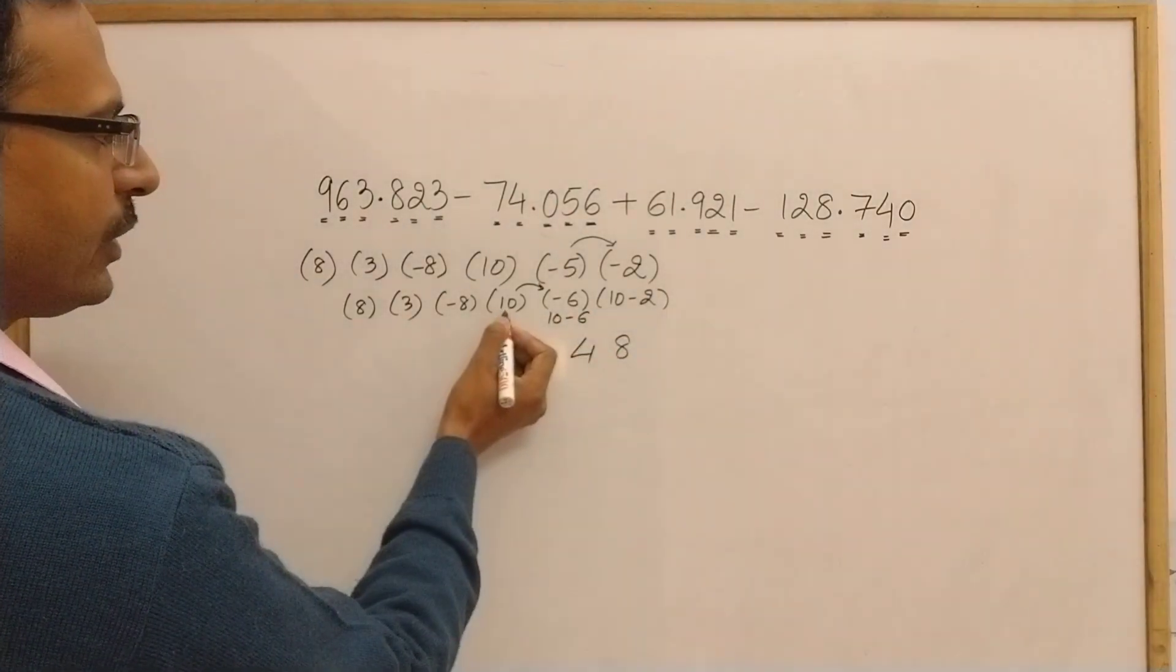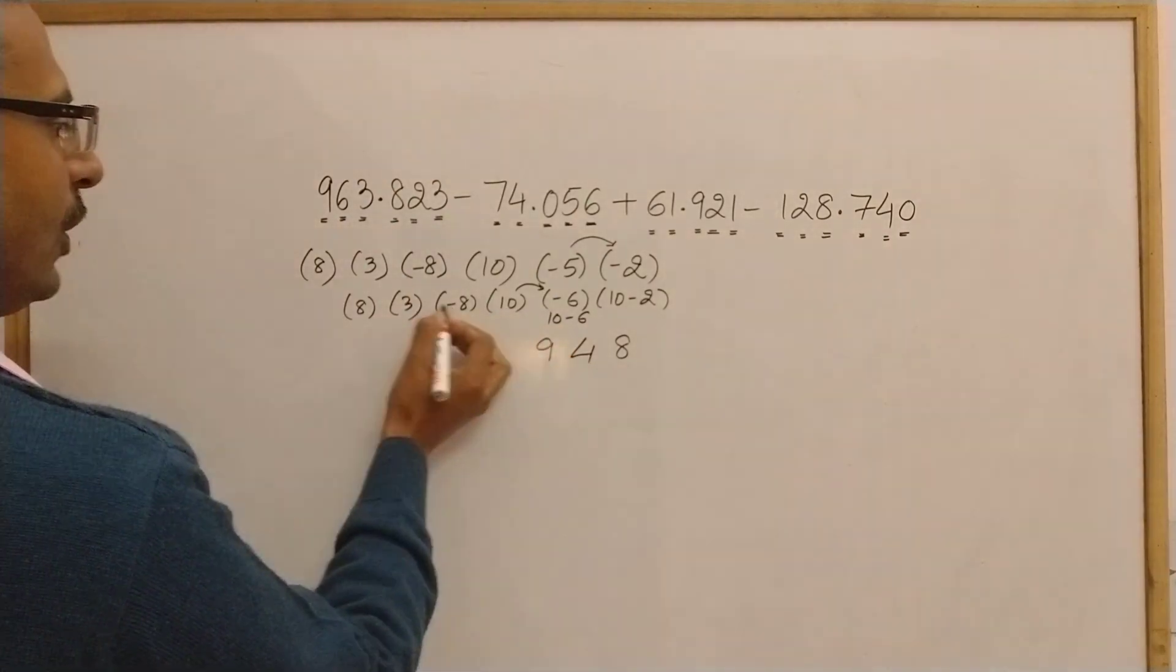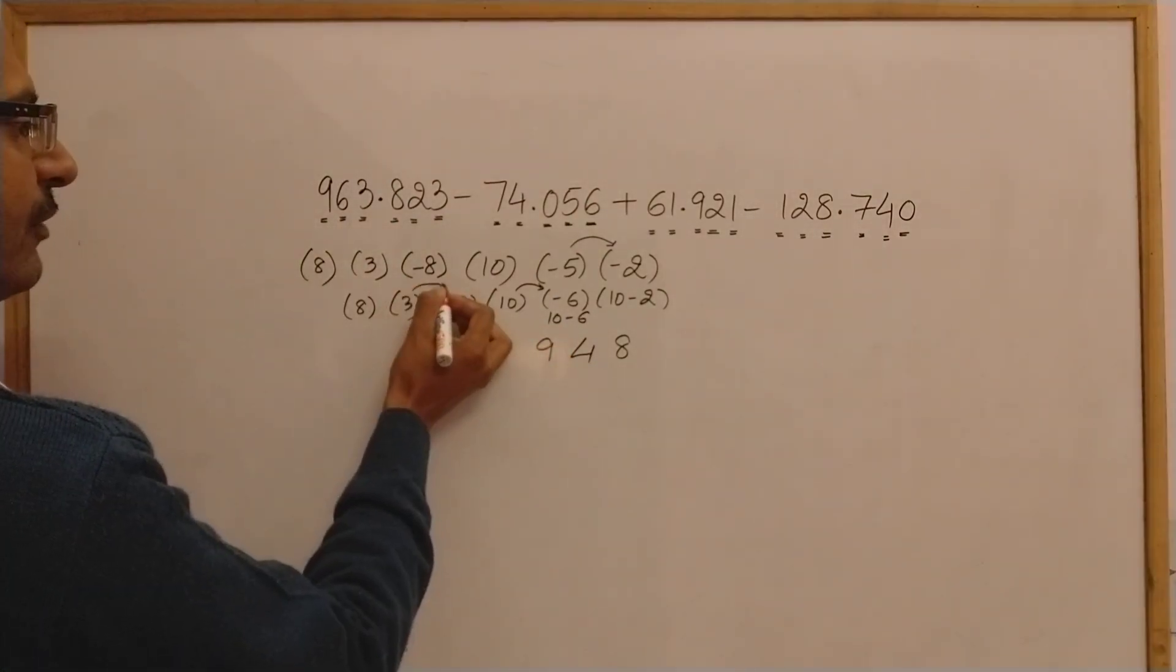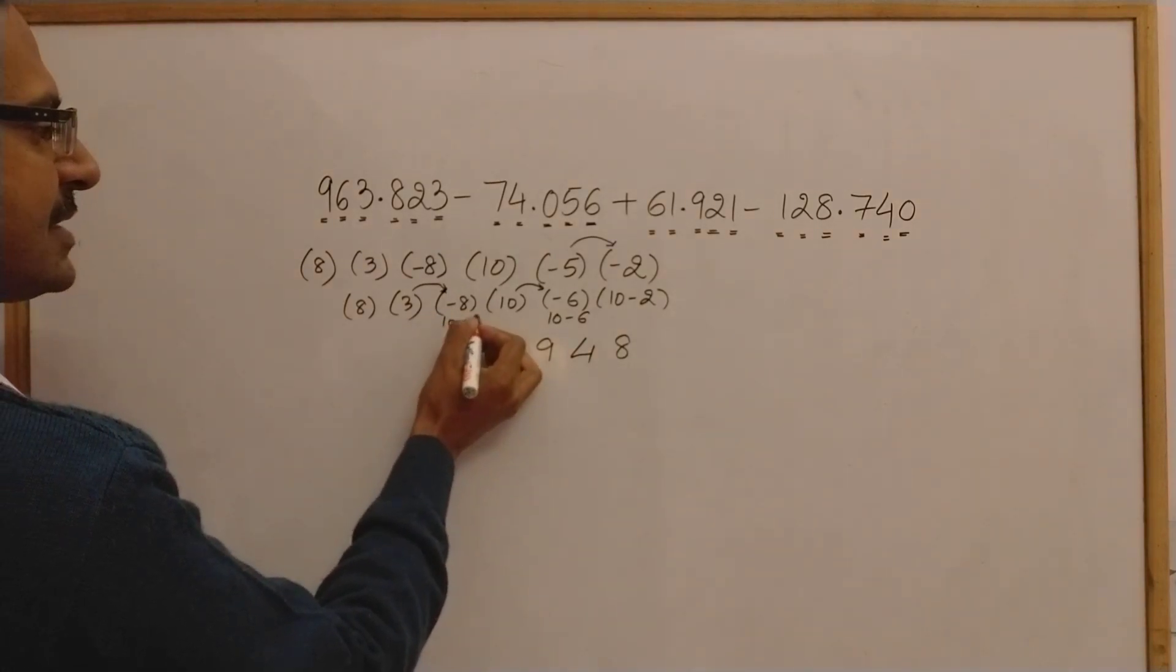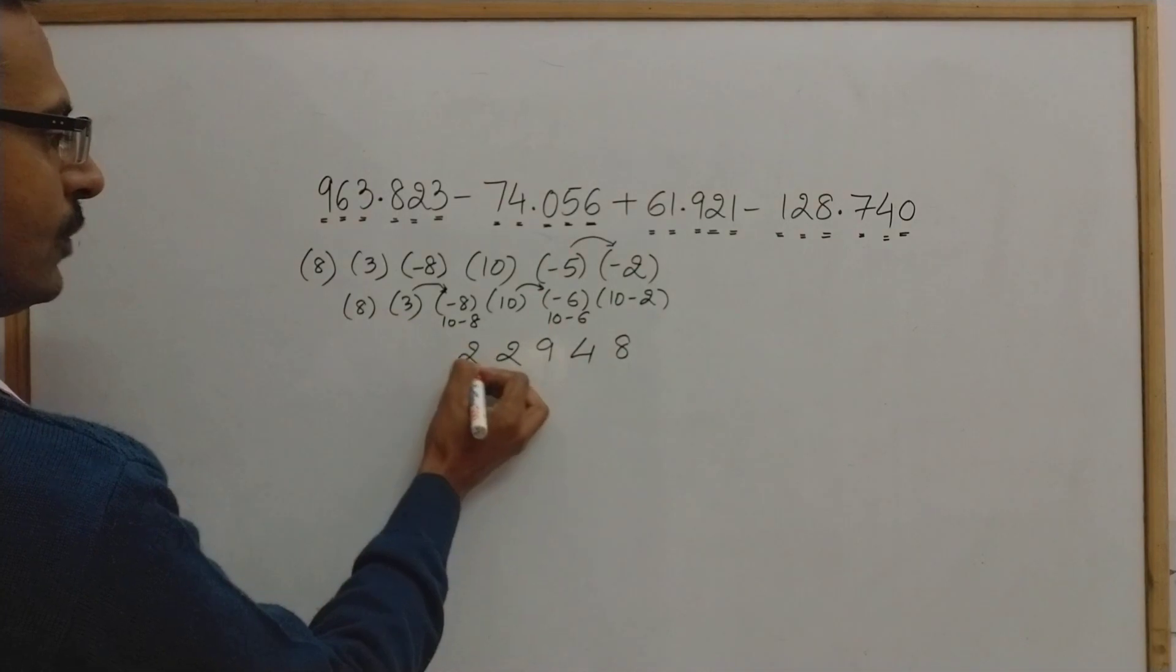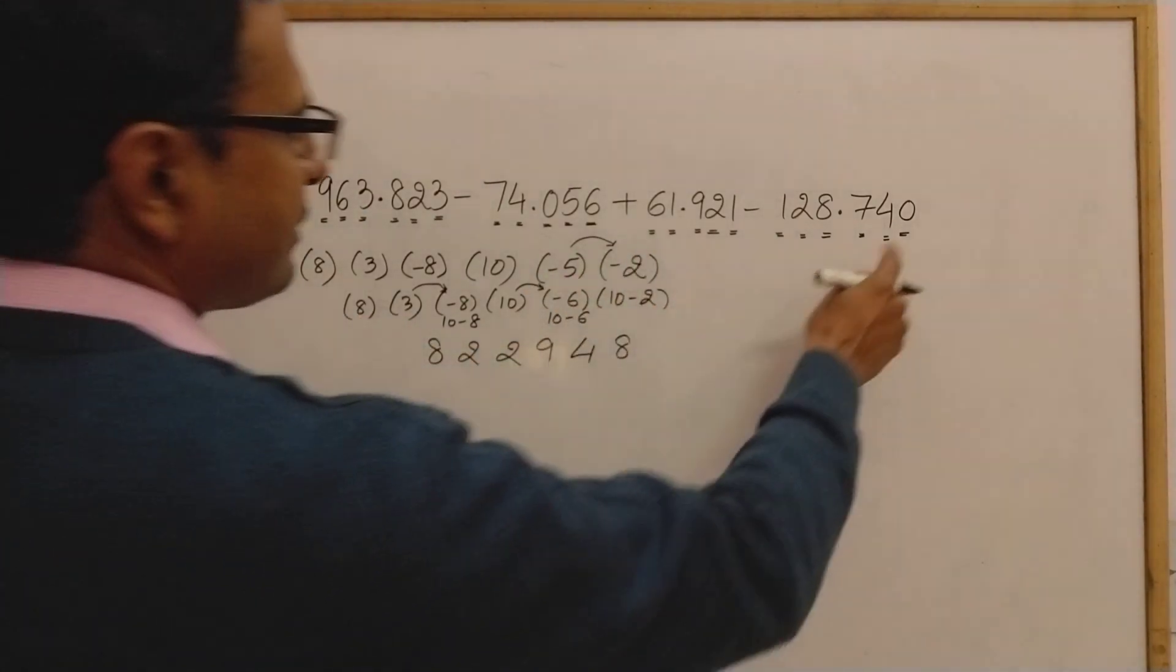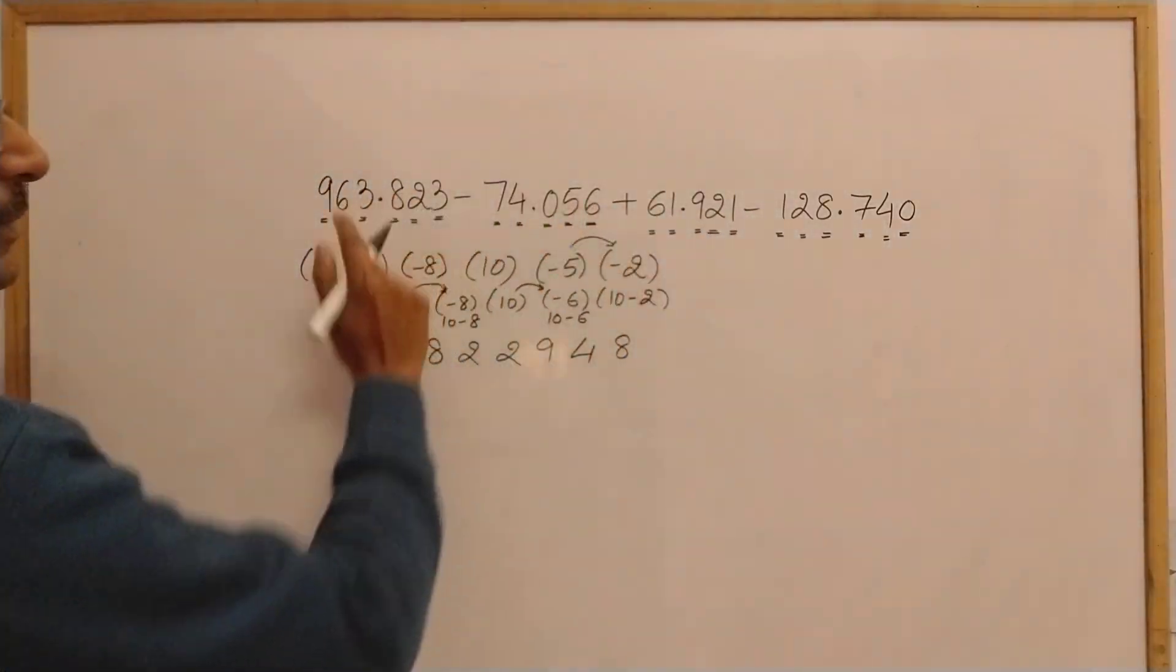If you borrow one from here this ten will become nine. Now again this is negative so I have to borrow one from here. This becomes ten minus eight which is two, and this gives one and becomes two, and finally we have eight here. So 822948, and what about the decimal? We have three decimal places in all the numbers, so one, two, three - 822.948 is the answer of this question.